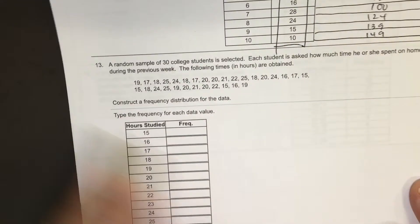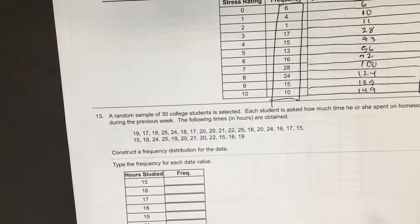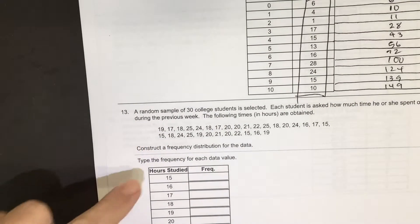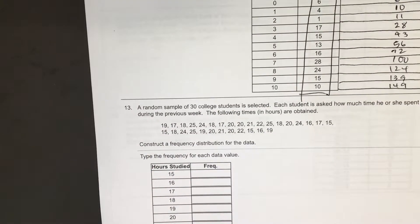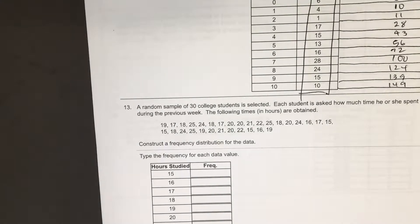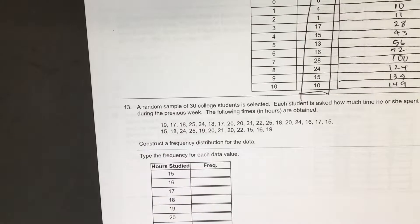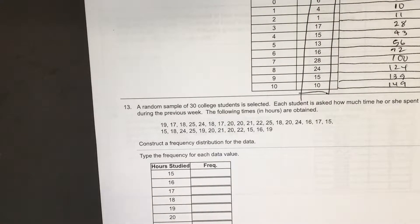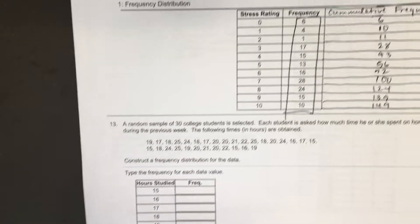Number 13 is an example of what I call the single number frequency distribution, where each category has a single number. On number 13, a random sample of 30 college students is selected. Each student is asked how much time he or she spent on homework during the previous week. The following times in hours are obtained: 19, 17, 18, 25, 24, 18, 17, and so on. Construct a frequency distribution for the data.